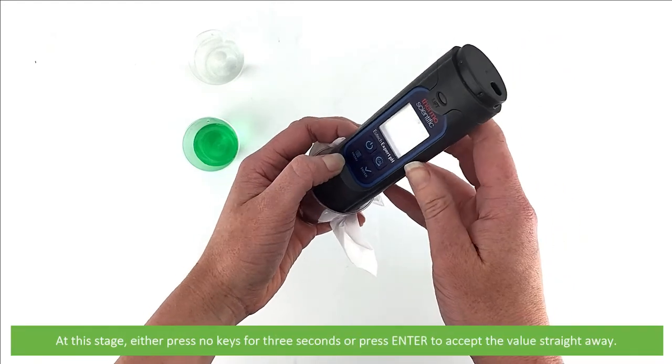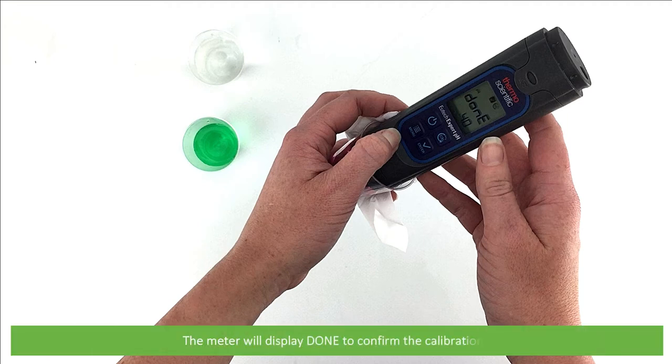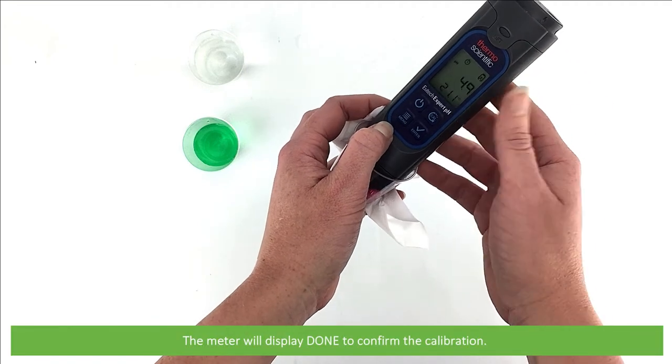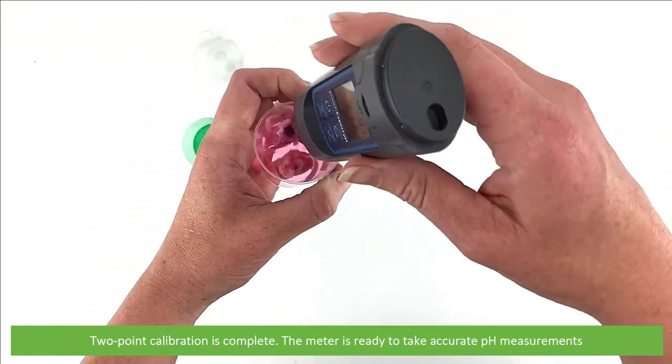At this stage, again, either press no keys for three seconds or press enter to accept the value straight away. The meter will display DONE to confirm the calibration. Two-point calibration is complete. The meter is ready to take accurate pH measurements.